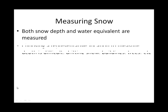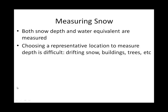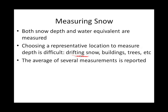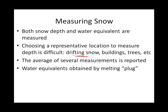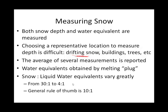Measuring snow is a tough one too. A big problem with snow is that if you have any wind, the snow relocates. So if you're trying to get inches of snow, that's difficult. Oftentimes they will give both the snow depth in inches and the water equivalent. You may have heard the general rule of thumb: you get 10 inches of snow for every one inch of rain.